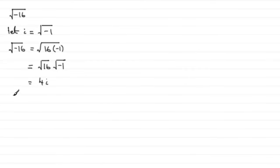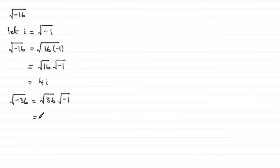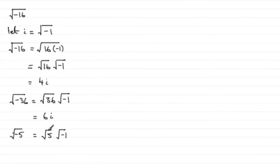Suppose you had the square root of minus 36 — what would that be? Well, again, we can think of this as the root of 36 multiplied by the root of minus 1, in other words 6i. And suppose you get the square root of minus 5 — what's that going to be? We think of this as root 5 multiplied by the root of minus 1. You can't square root 5 as an exact value, so we just leave it as root 5, giving us root 5·i.